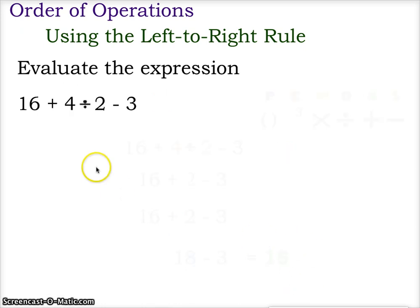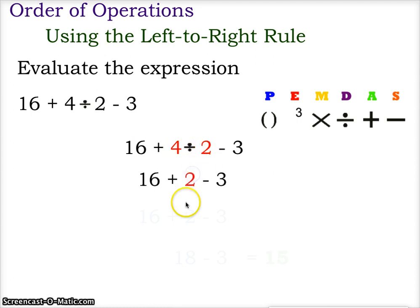A third example. We have 16 plus 4 divided by 2 minus 3. And again, we don't have grouping symbols, so there's no order of operations using grouping symbols. And we also do not have any exponents here. So we are going to begin by doing the division first. As we are reminded that parentheses, grouping symbols, there are none. Exponents, there are none. So we're going to do the multiplication and division first. And working left to right, we're going to do 4 divided by 2. This gives us a value of 16 plus 2 minus 3.